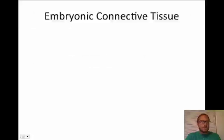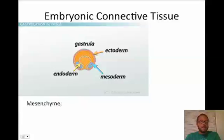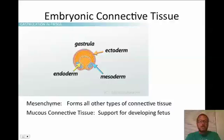First, we should make sure we know where all this connective tissue comes from. We learned about the gastrula — there are three germ layers: the ectoderm, endoderm, and mesoderm. Mesoderm is what gives rise to all of our connective tissue. There is mesenchyme and mucus connective tissue. We're going to focus on the mesenchyme because it forms all other types of connective tissue. Mucus connective tissue is really just for supporting the developing fetus. So we're focusing mainly on mesenchyme, or mature connective tissue.